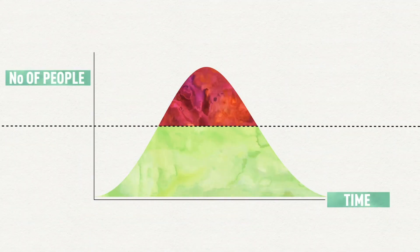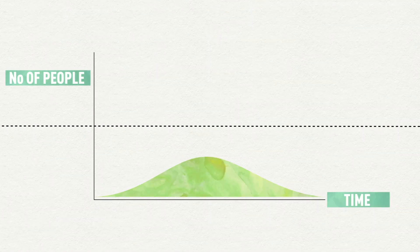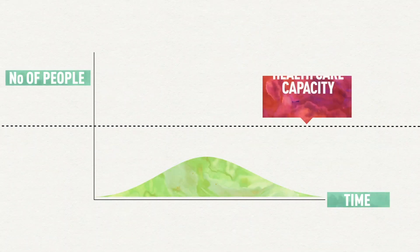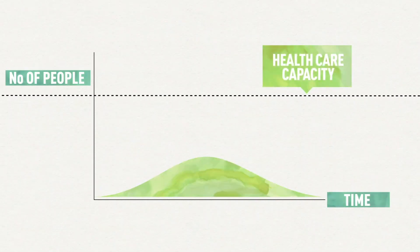That's why we need to urgently slow the number of people getting infected. That's why we need to flatten the curve. At the same time, governments are working to ramp up the capacity of our health care system.